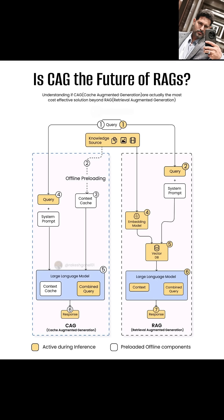Notice that the embedding generation and retrieval happen during inference, meaning every time a query comes in. Now, let's look at CAG, or cache augmented generation. The key difference here lies in an offline preloading step. Instead of embedding and retrieving on every query, CAG pre-processes and stores relevant information in a context cache before inference.